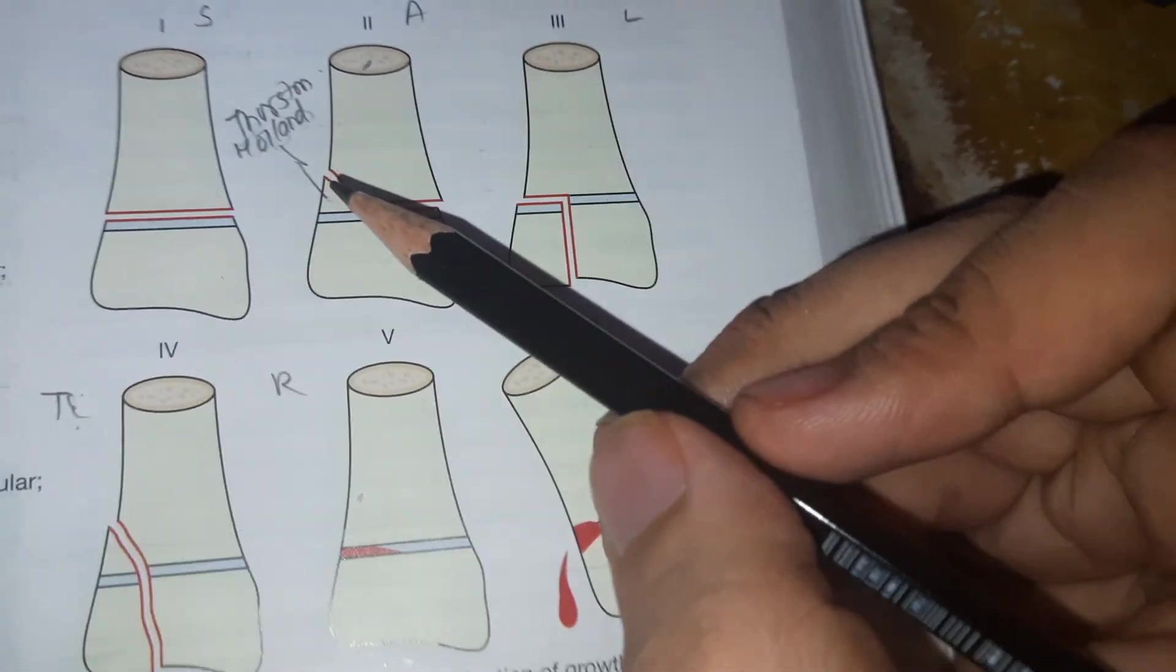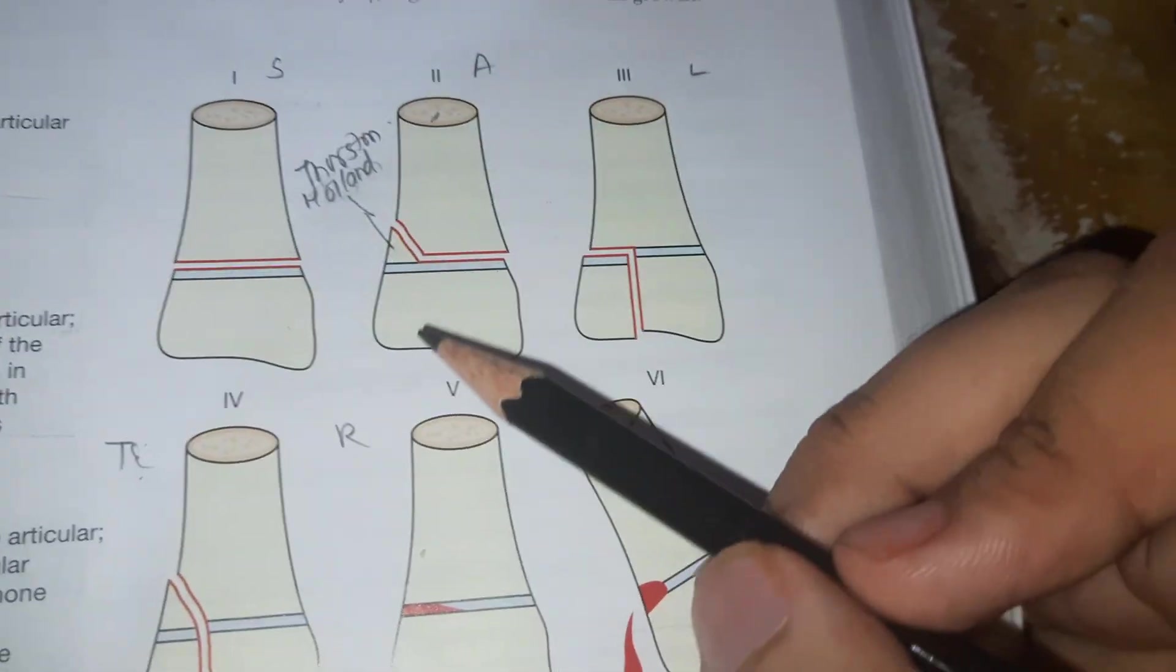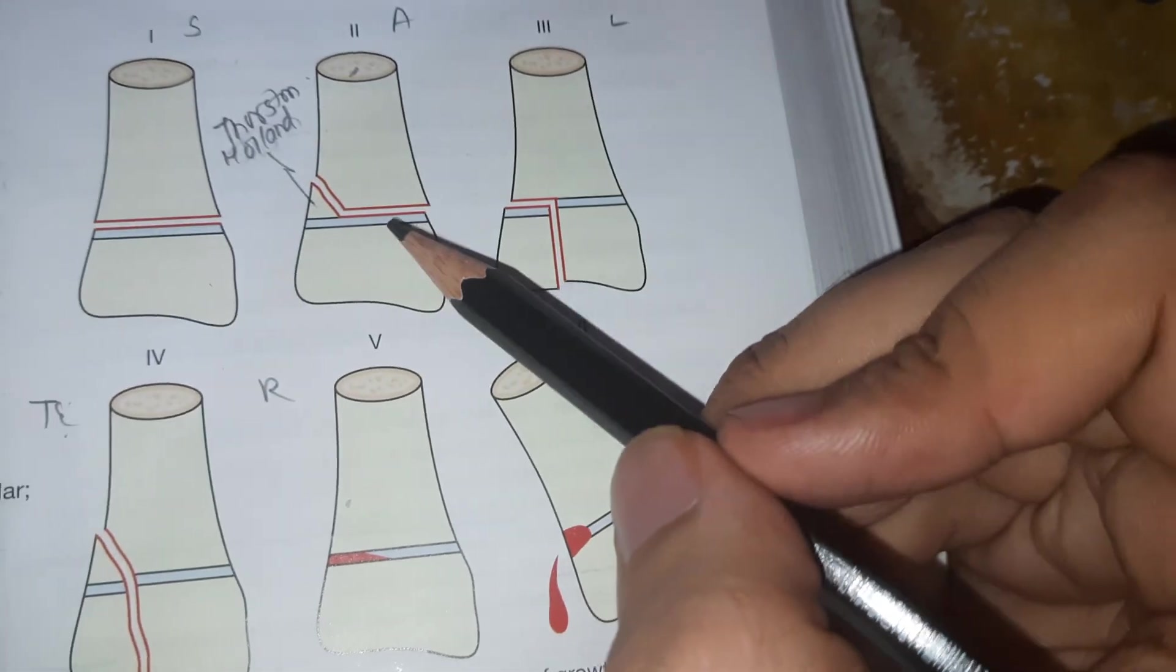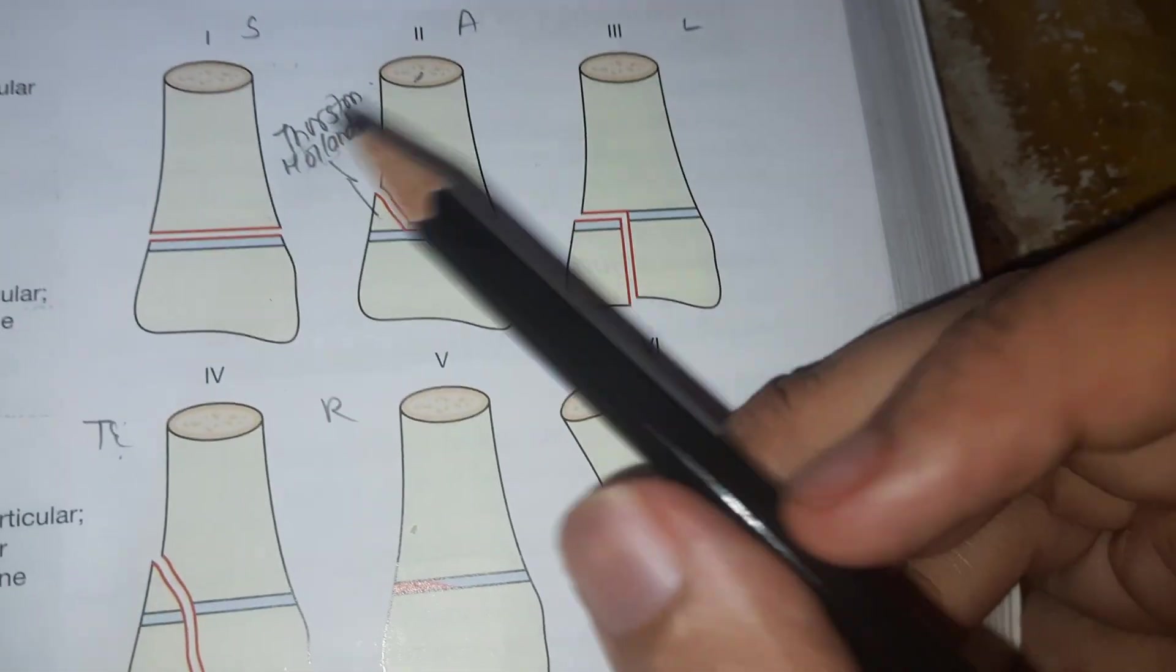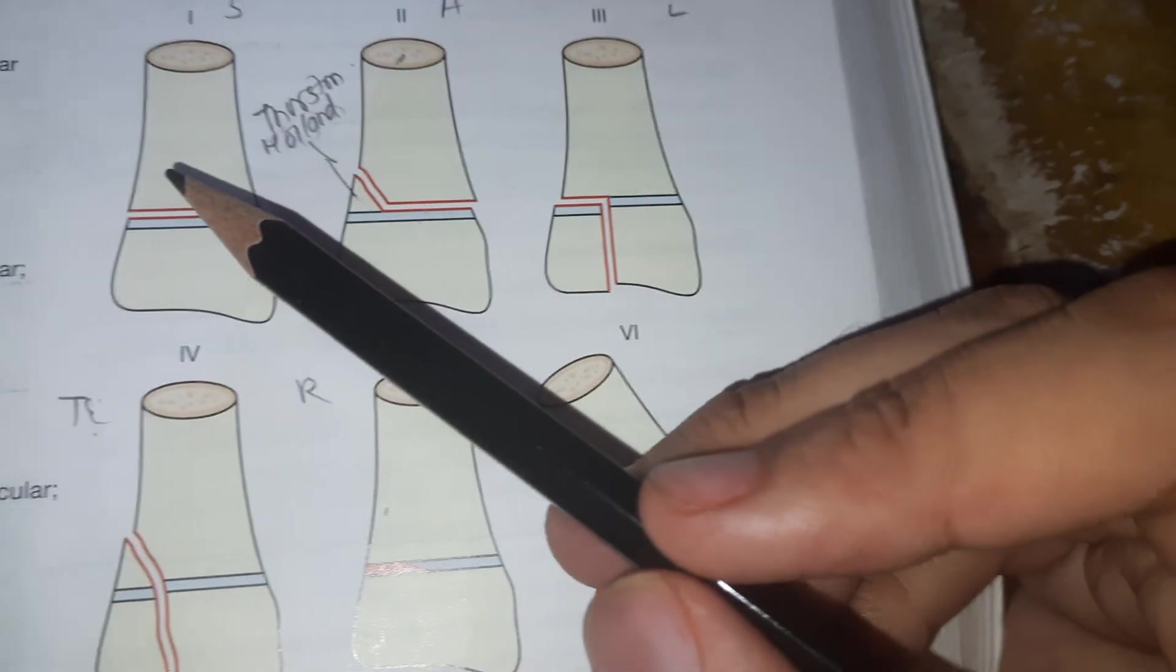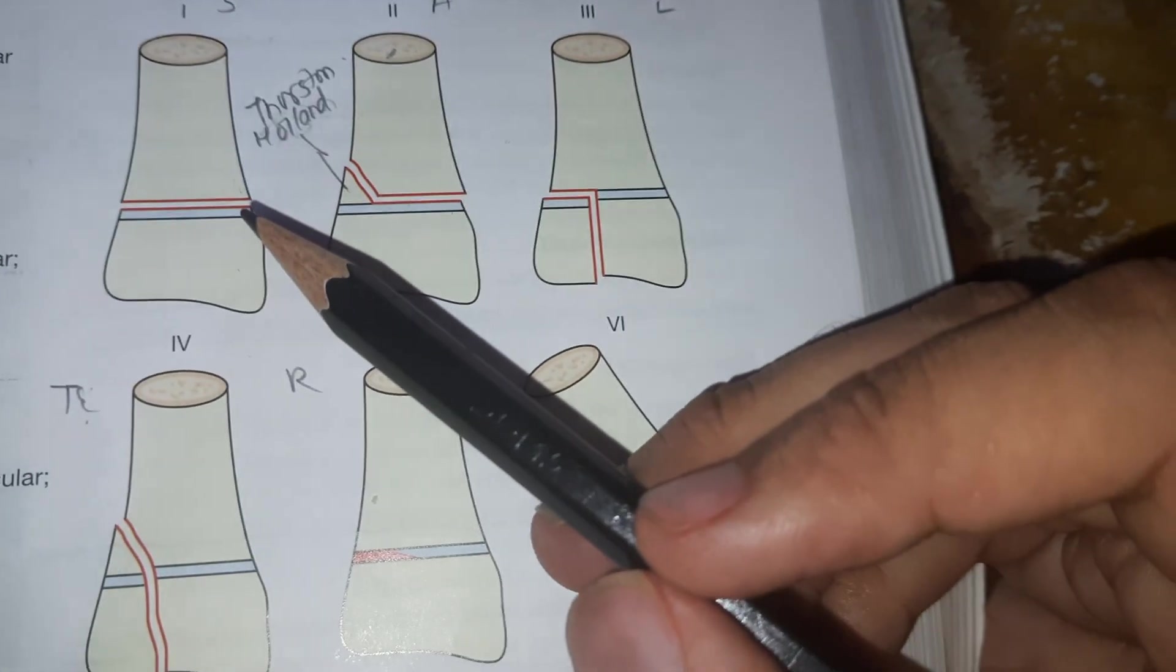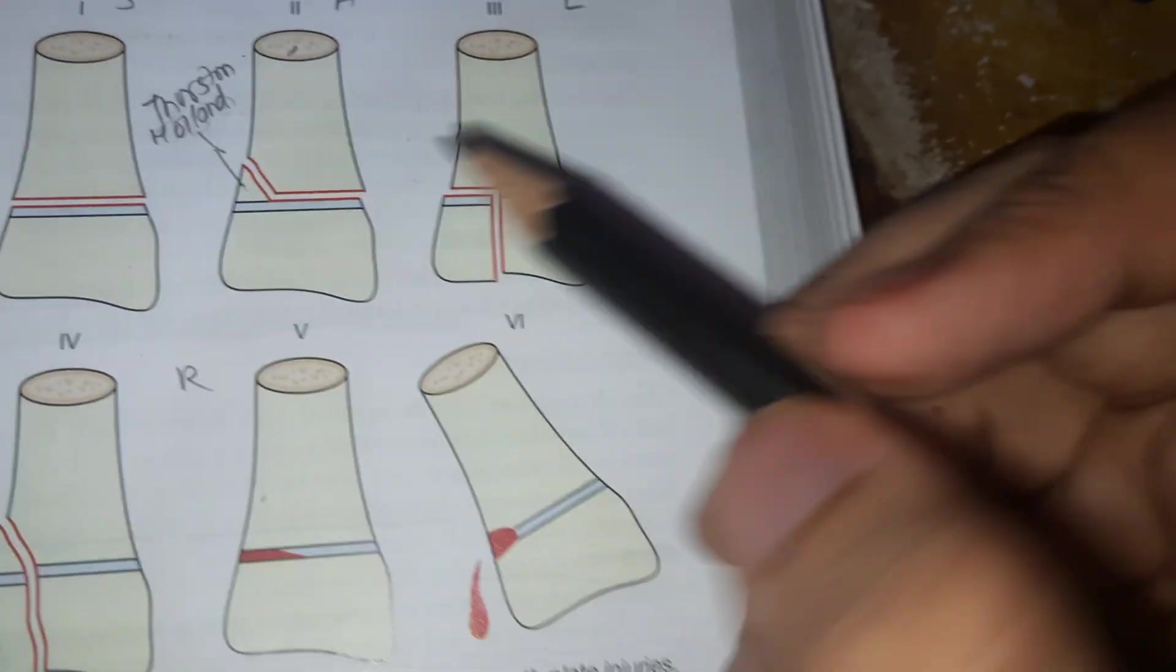This has a good prognosis. This is seen in supracondylar fracture of humerus and also in fracture of phalanges. In Type 1 fracture, this is seen in SCFE, slipped capital femoral epiphysis, and both have good prognosis.